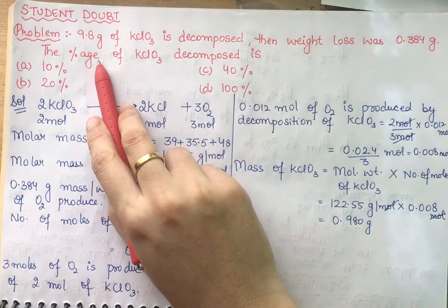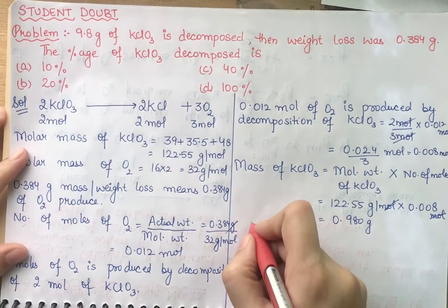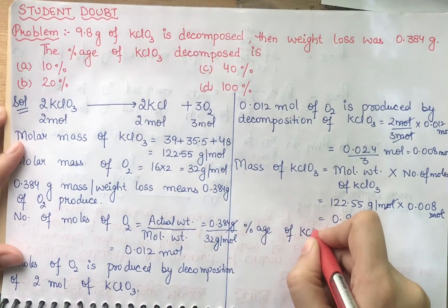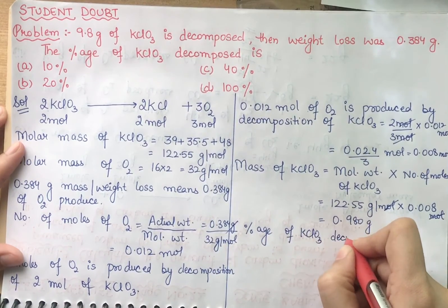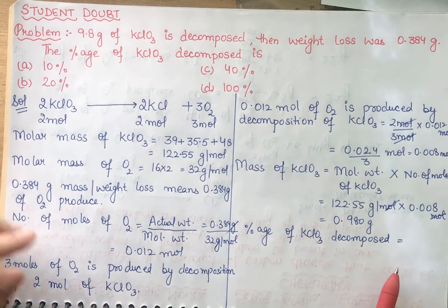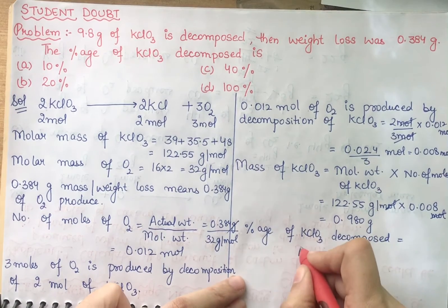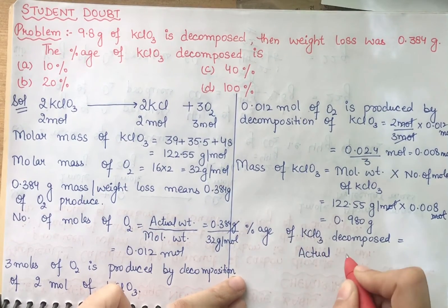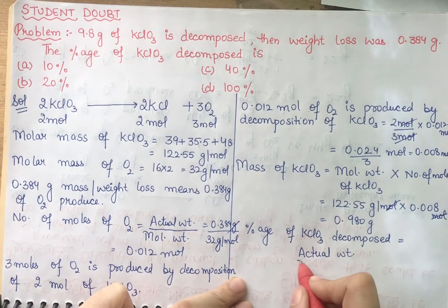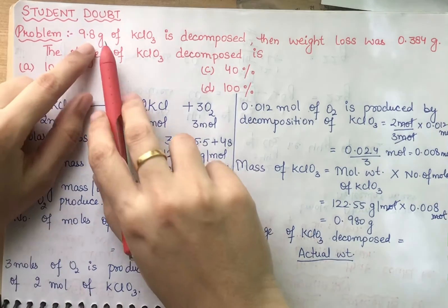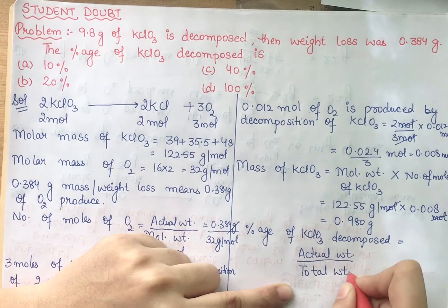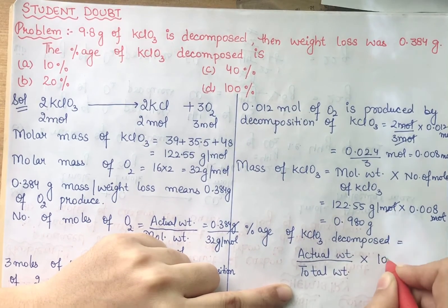Now we have found out what to do. We have to find out percentage. So how will the percentage come out? Percentage of KClO3 decomposed equals actual weight over total weight. Total weight is 9.8, times 100.